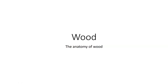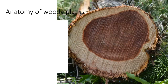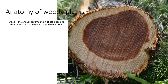The anatomy of wood. Let's see what wood is. We start out with certain terms. When you see woody plants, these are plants that have an accumulation of cellulose. Wood is, by definition, the annual accumulation of cellulose and other materials that creates a durable material.